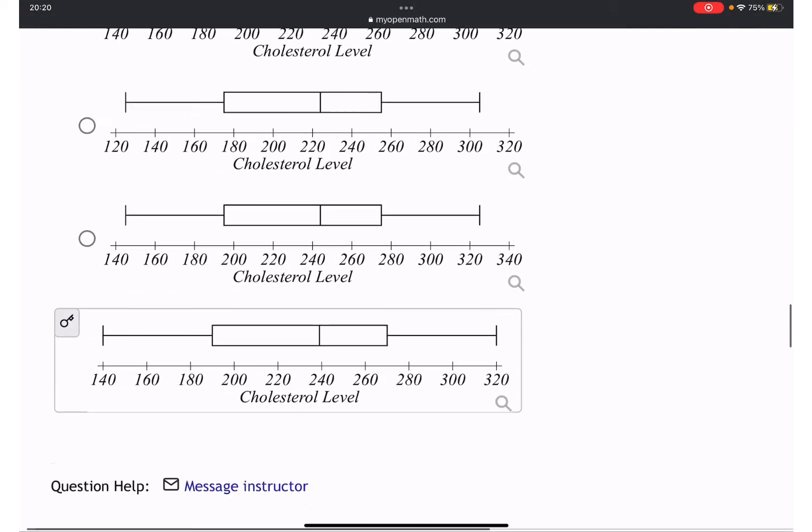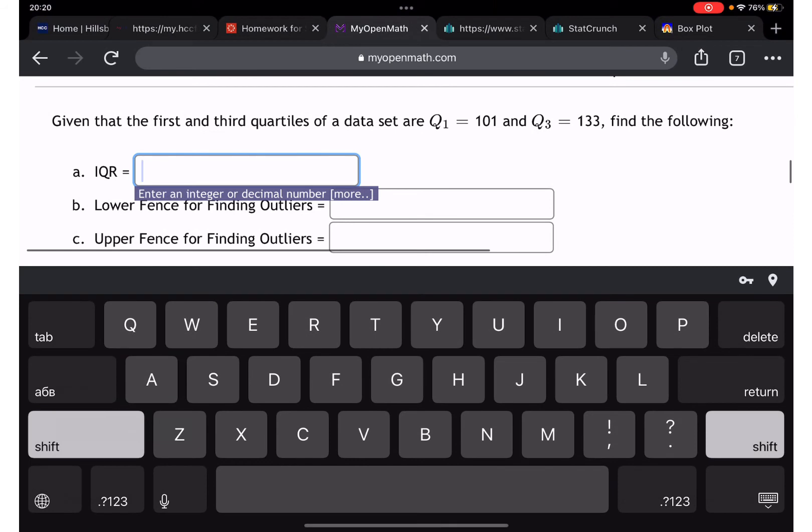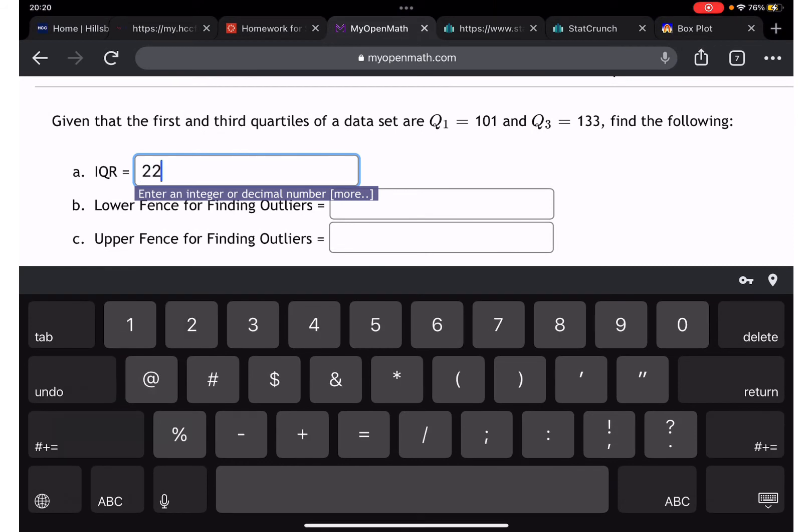What else? Given that first and third quartiles are 101 and 133, how much will be the interquartile? Well this is easy. We can answer 133 minus 101, so it's gonna be 32.